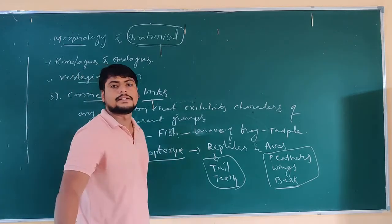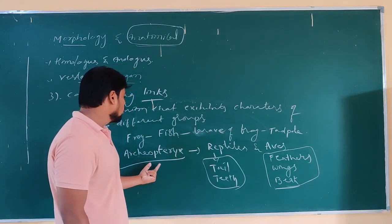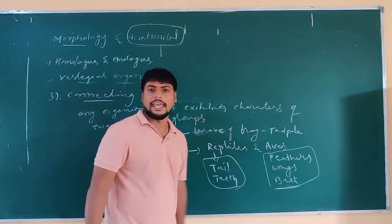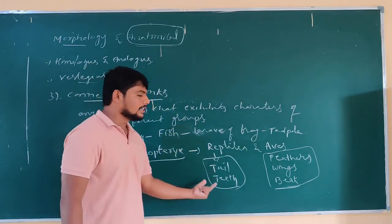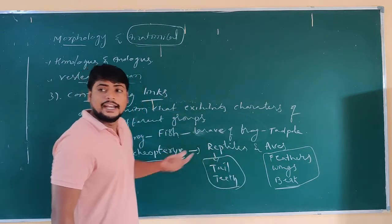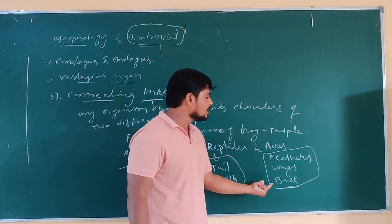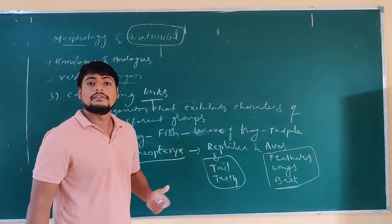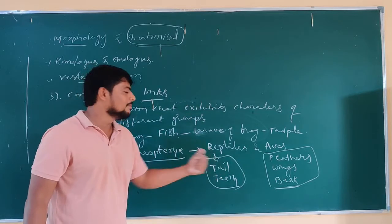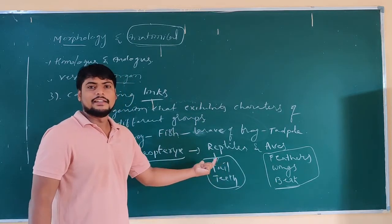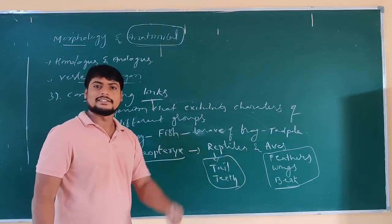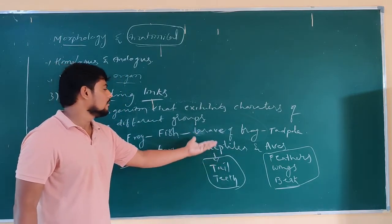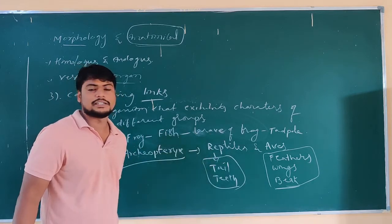From the group of birds or aves, Archaeopteryx is showing the characteristics of reptiles as well as aves. It is showing the tail and teeth — characteristics of reptiles — and also showing the characteristics of aves, that is feathers and wings. So which organism is having characteristics of both reptiles as well as aves? That is Archaeopteryx — a connecting link.